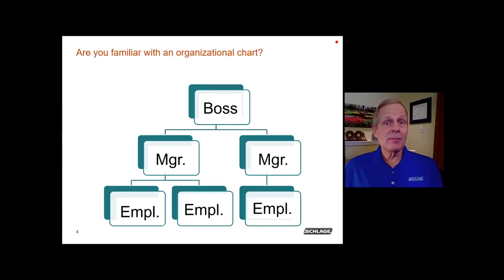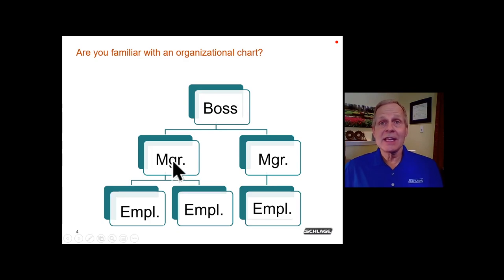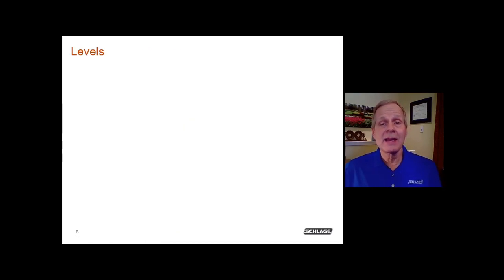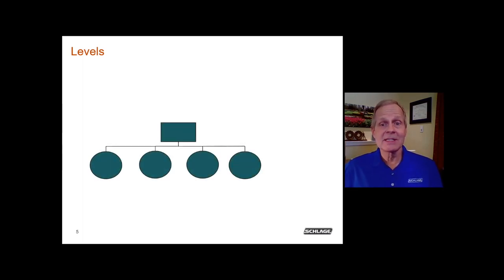Most of you are probably familiar with an organizational chart. There is a hierarchy: the boss at the top, then managers or supervisors at the next level, and individual employees at the base of the pyramid. This is the same layout we're going to use for a key schematic. One of the first things we must determine is how many levels there are going to be in that schematic.